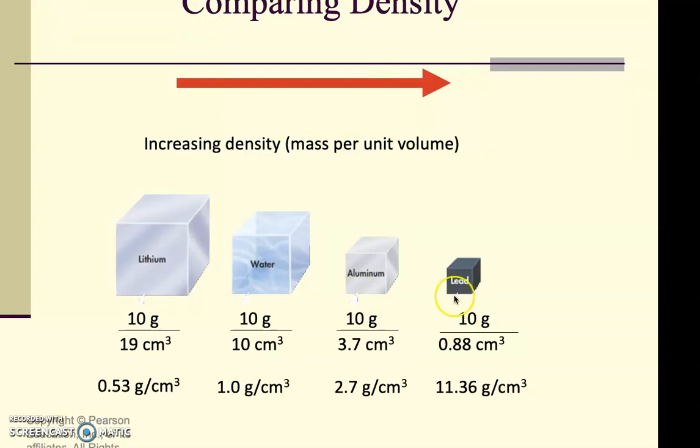Now, if you look at different substances here, you can see increasing density mass per unit volume. Here, you have the same mass of each substance, but a different volume. And if you look down here, you can see their densities are different. The density of lithium is lower. Even though it has a large volume, its density is quite small compared to lead's. Lead is quite heavy per its volume. So lead has a greater density than aluminum, than water, than lithium. So these are things that you should make comparisons to if you had to compare them to understand which one has a greater density than the other.